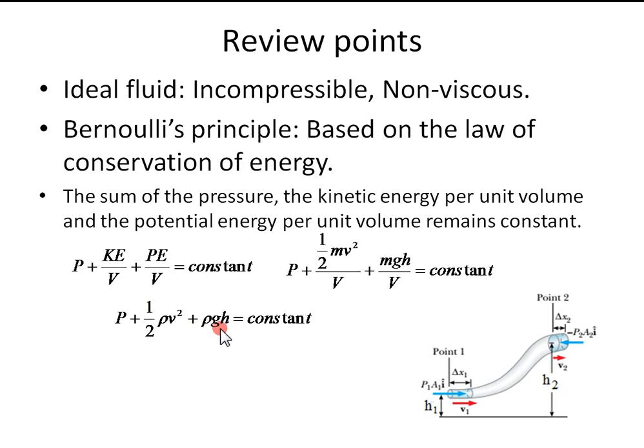For the case where rho gh can be neglected, like that of a horizontal pipe or an aircraft in flight, the static pressure plus dynamic pressure equals total pressure, and that total pressure remains constant.